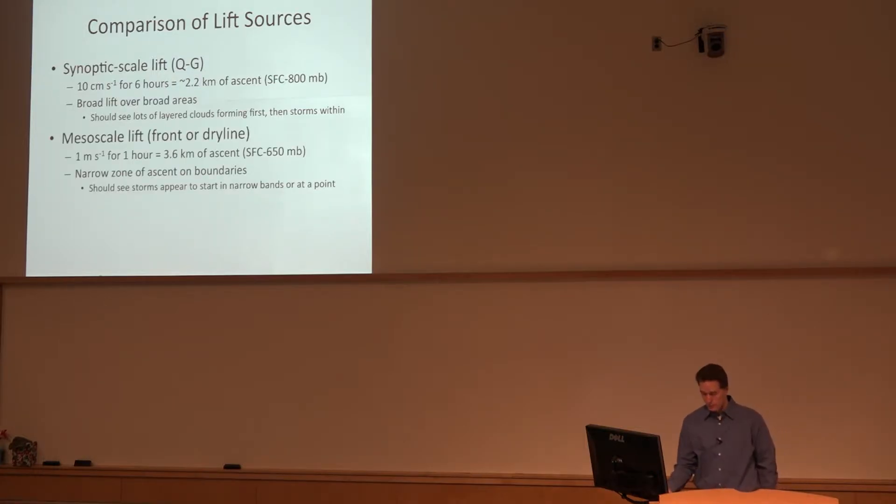Mesoscale lift, we're talking about a front or a dry line, it's more like on the order of a meter per second for an hour or so. So just in one hour you can get more than twice or almost twice the depth of ascent in a sixth the time with the typical vertical motion you see on the dry line. But these are narrow zones and you have to make sure the storms or the potential parcels that would feed a storm stay in that zone of ascent. And again, here you won't expect to see big areas of cloud cover, they should start in little bands or small points. So how the storms originate usually tells you what the source of ascent is that is initiating the convection.